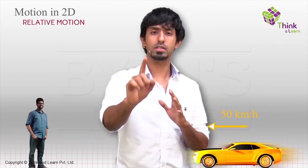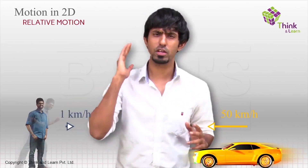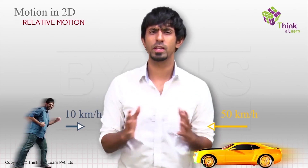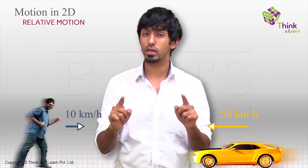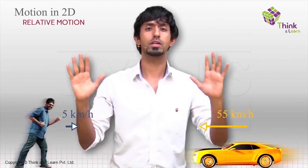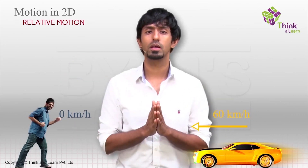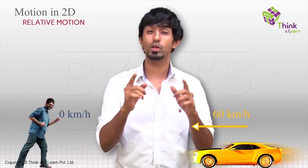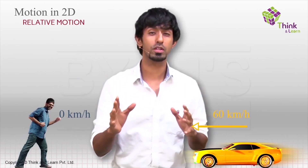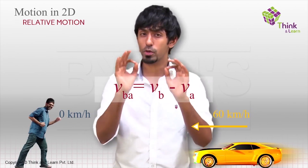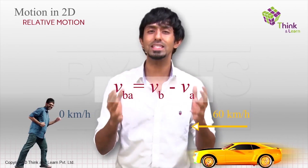To understand this, let's begin with something easy to imagine. Imagine there is a car coming right at you at 50 kilometers per hour. If you get brave and start running towards it at 10 kilometers per hour, you will see the car coming towards you at 60 kilometers per hour.